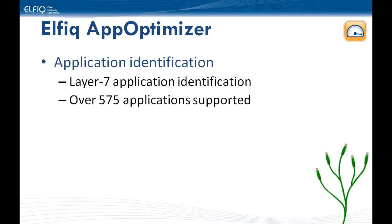The Elphic App Optimizer will provide three core functionalities and benefits to the organization. The first one being application identification — it has the ability to detect over 575 applications. The Elphic App Optimizer can effectively detect the traffic type of any session being transferred over your ISP links.